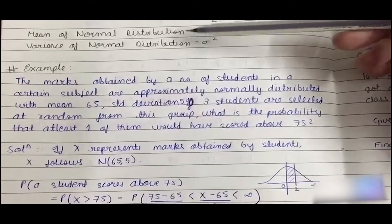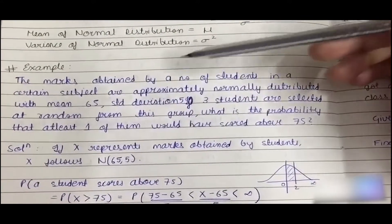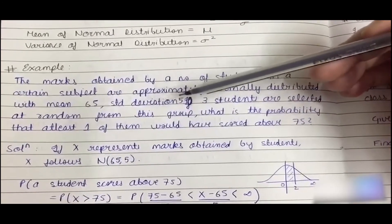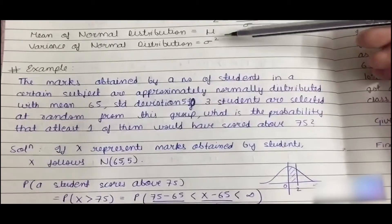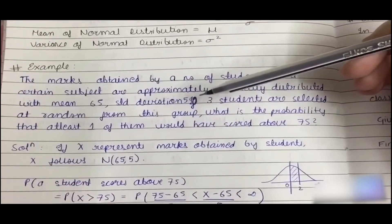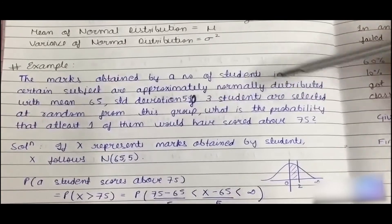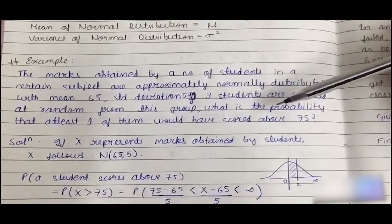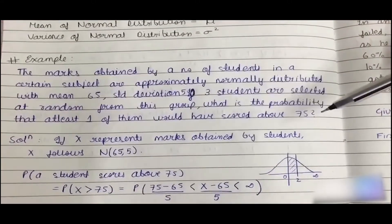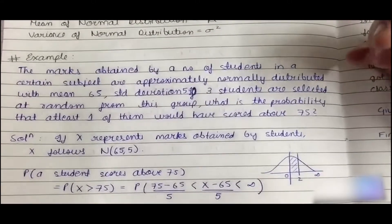Since variance is sigma square and standard deviation has been given, variance is square of the standard deviation, so sigma square would be 25. Now it's given that if three students are selected at random from this group, what is the probability that at least one of them would have scored above 75?